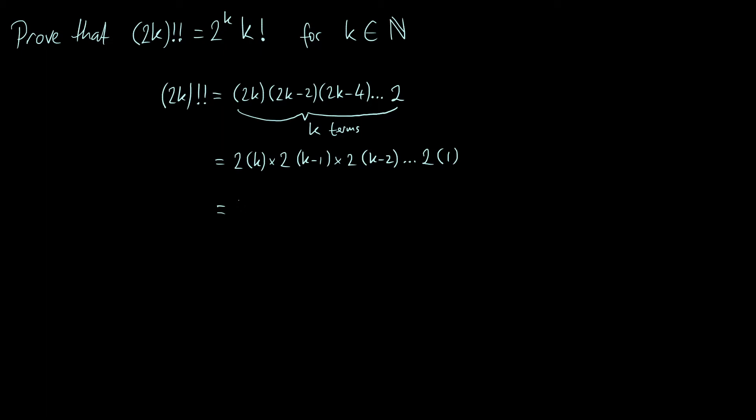So what we've got is a factor of 2^k from all of these twos combined together. What we're left with when we factorize out that 2^k is just k times (k-1) times (k-2), all the way down to 1, which is 2^k times k!.